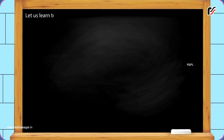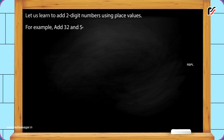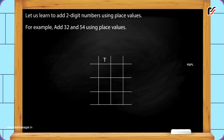Let us learn to add two-digit numbers using place values. For example, add 32 and 54 using place values. Write T and O in the blocks as shown. Find out how many tens and ones are there in the given numbers. In 32, there are three tens and two ones. So, write three under the tens column and two under the ones column.